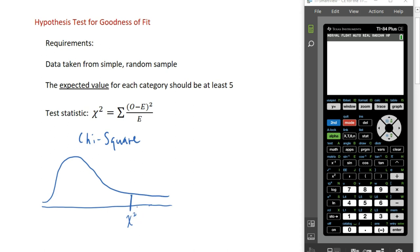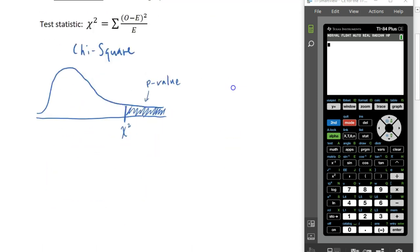As we do the test, we're going to compute that p-value, which represents the area to the right of the chi-square statistic. It works much the same way, but we are using a distribution that looks quite a bit different. So, let's look at an example.